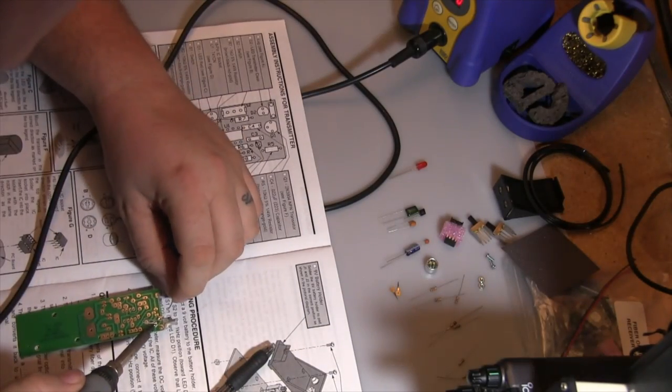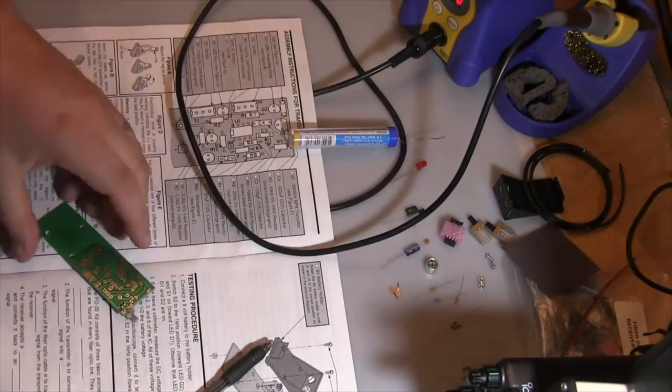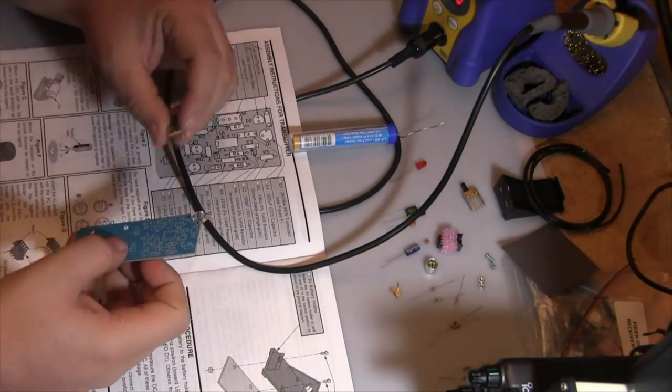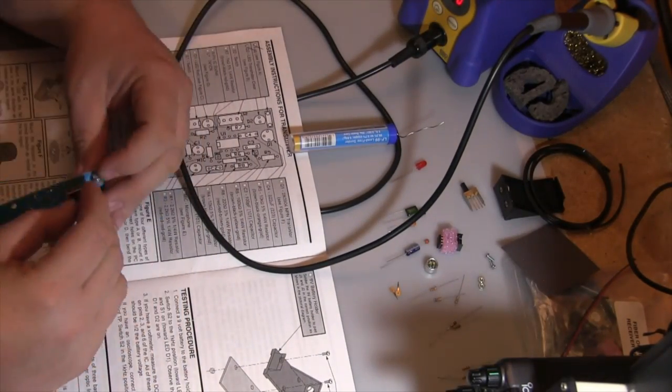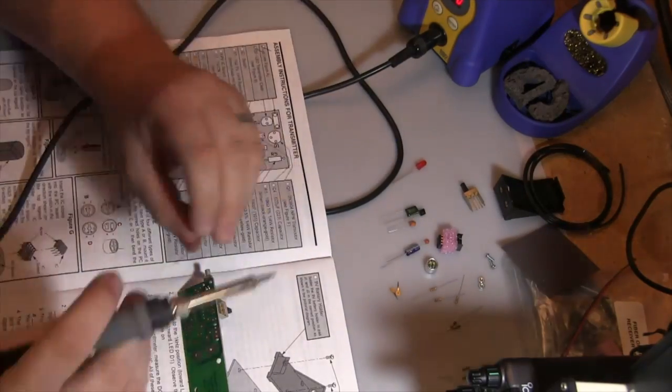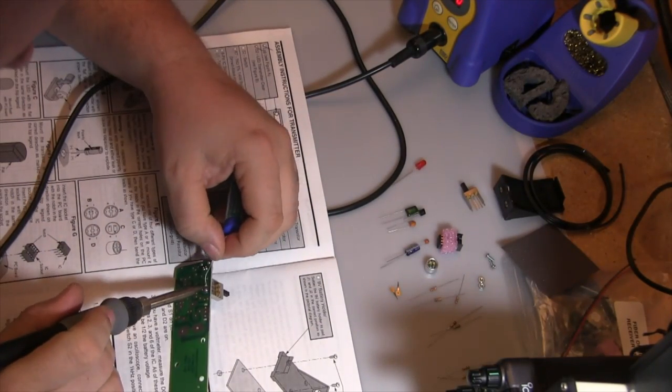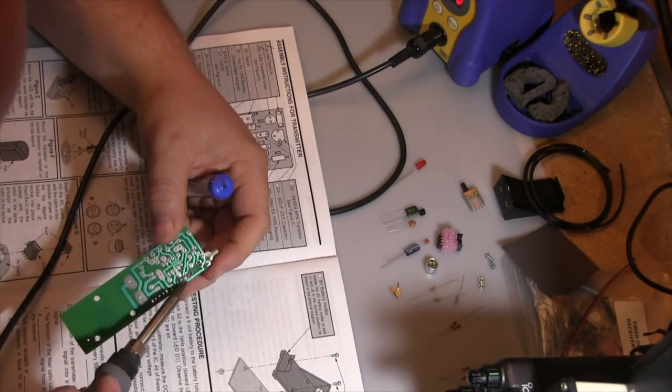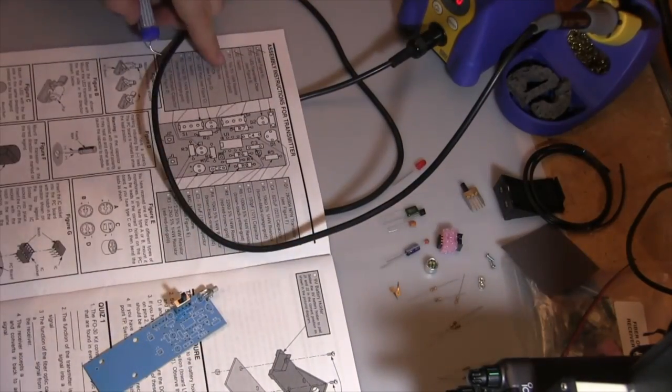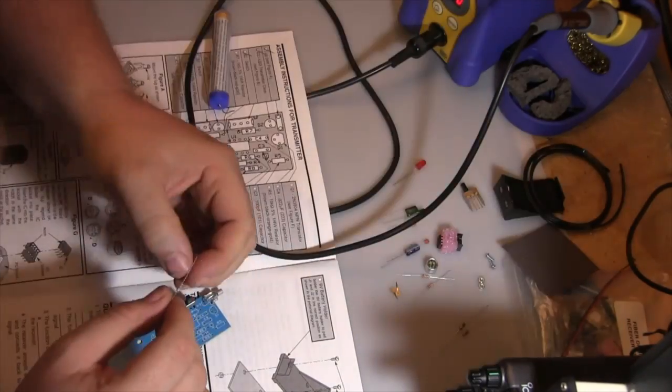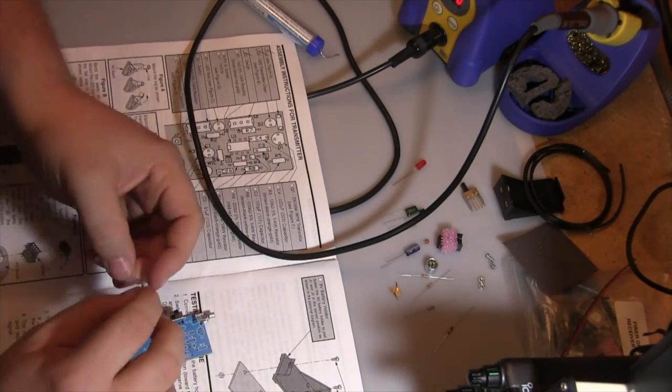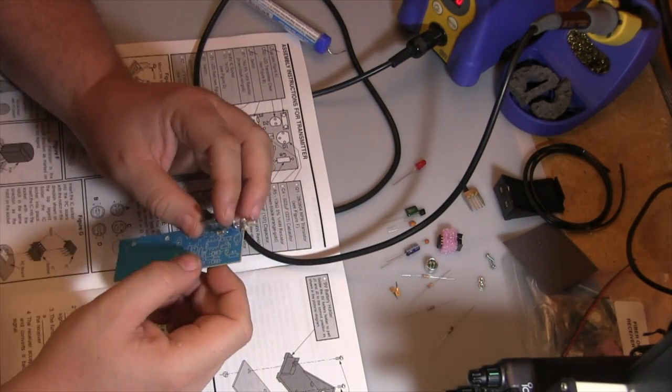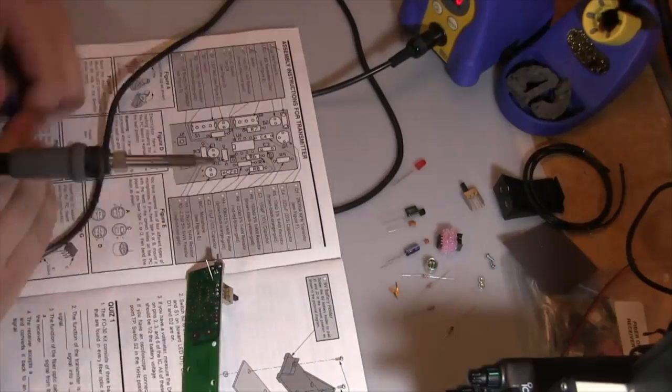I'm clipping all the leads as I go. You may notice I'm not using helping hands. I wanted to show this without using any equipment aids, so you can do this at home if you have a soldering iron. I'm soldering down the switches. There are two switches: one for the tone generator and the other to turn on the transmitter itself.